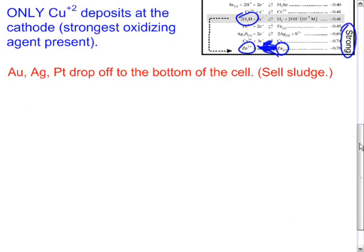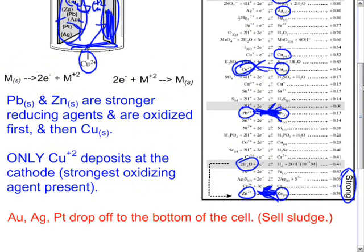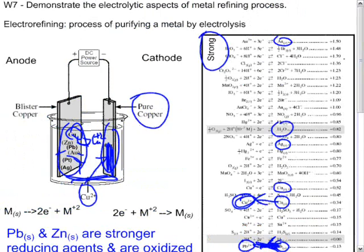And gold, silver, and platinum drop to the bottom of this particular cell. You should definitely sell that sludge to another company who specializes in recovering it because that will be very valuable sludge. And this is how you use an electrolytic cell to purify metal by electrolysis. This concludes this Chemistry 12 review.